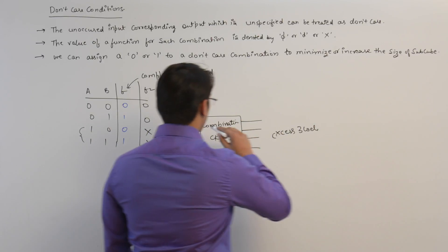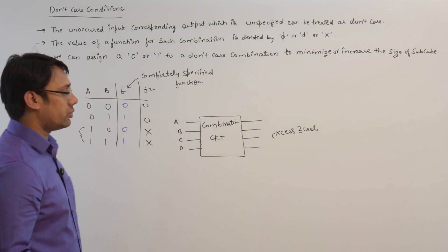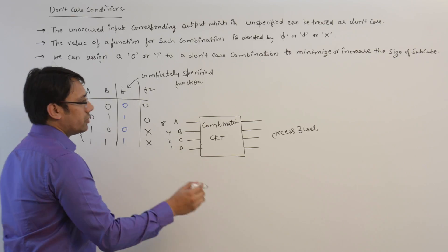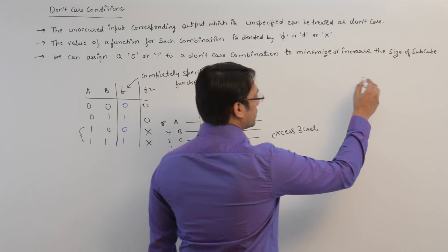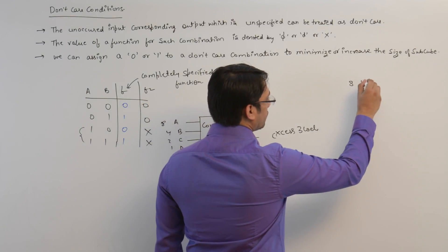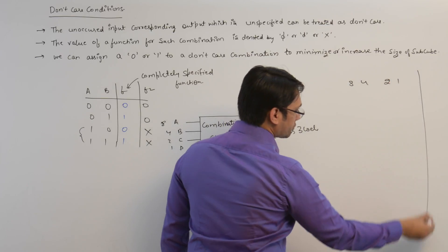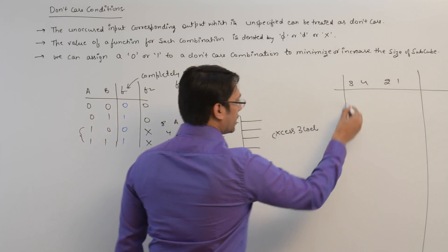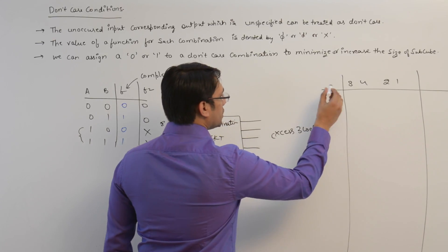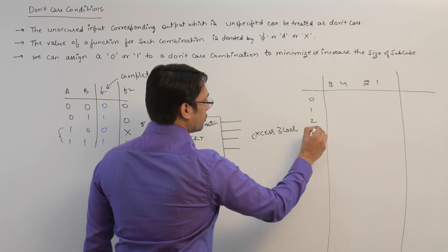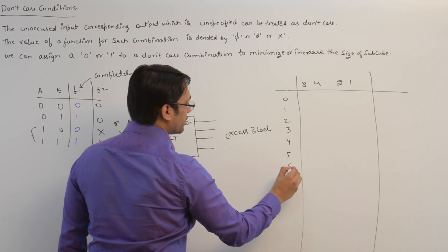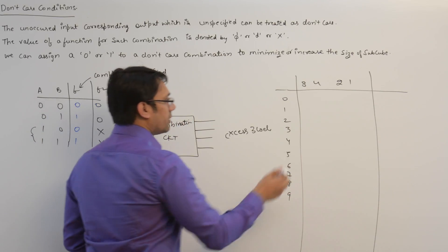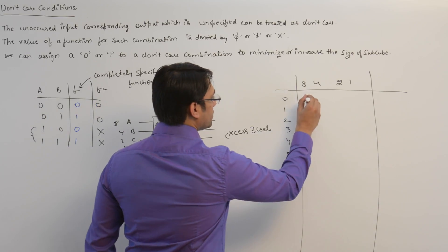In this case, the input is an 8421 code — that is, weights 8, 4, 2, and 1. With 8421 code we can represent the decimal digits 0, 1, 2, 3, 4, 5, 6, 7, 8, and 9.